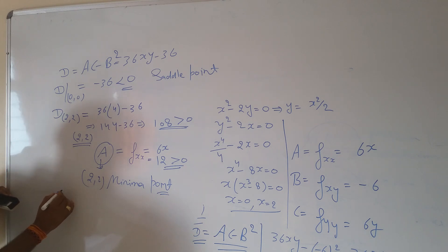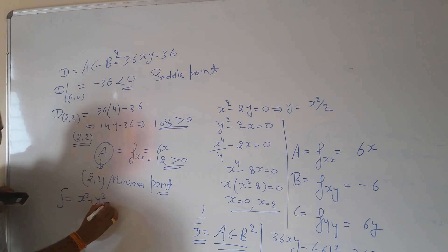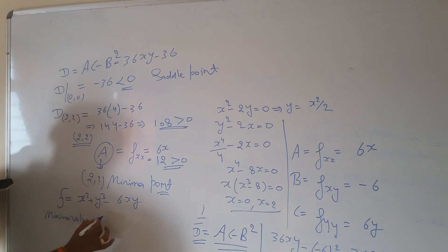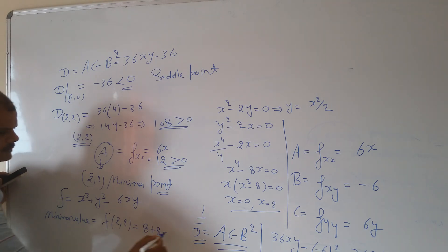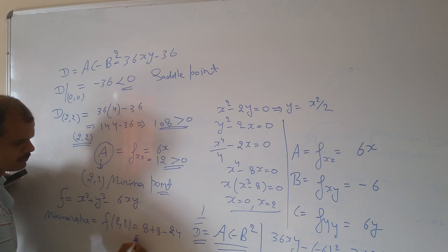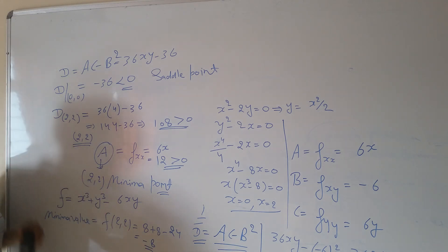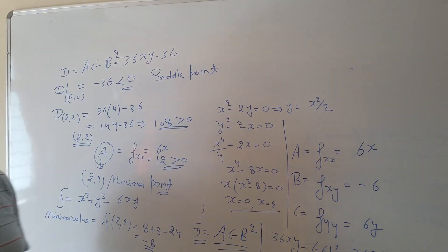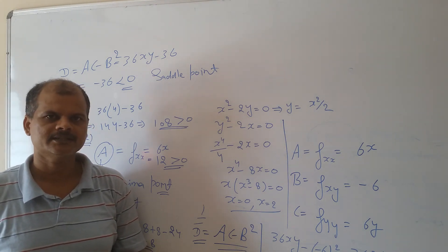The minima value is f(2, 2) = 2³ + 2³ minus 6(2)(2) = 8 + 8 minus 24 = minus 8. So for this problem, minus 8 is the minima value and (2, 2) is the minima point, while (0, 0) is the saddle point. If you like my video, please like, share and subscribe. Thank you.